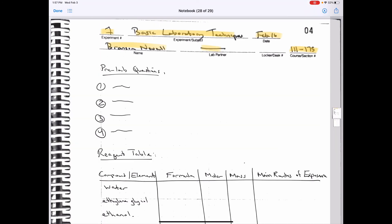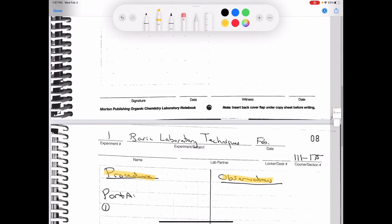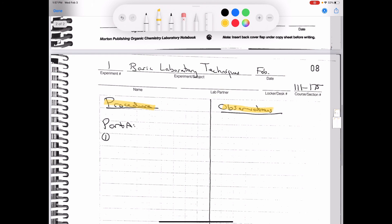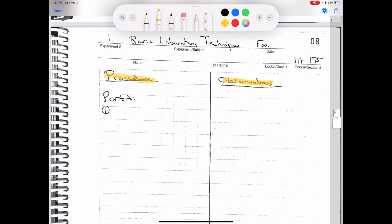So again, you have to have the pre-lab questions completed, the reagent table completed, and you've got to have your procedure written out and ready to go. Your procedure for all parts, part A, B, C, D, and E.